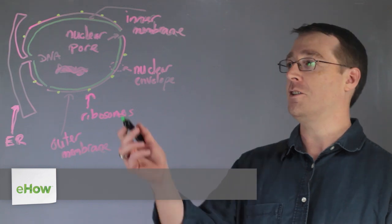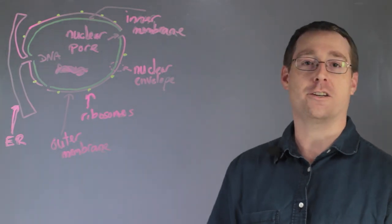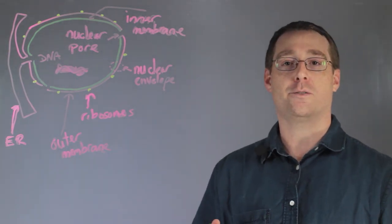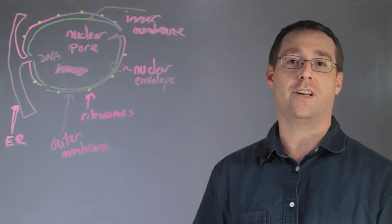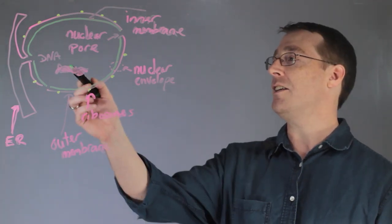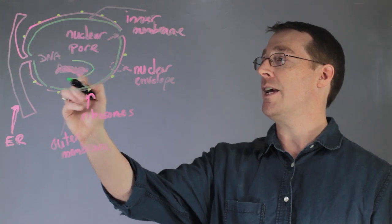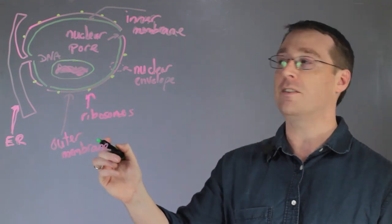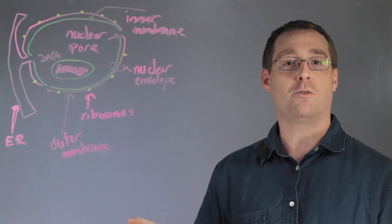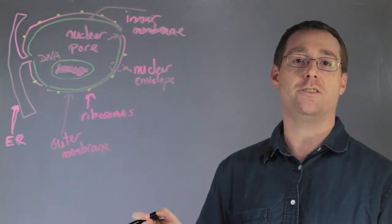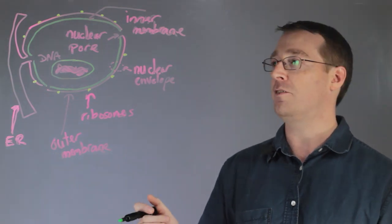Now the nucleus, shown here in this cross-sectional representation, is a small compartmentalized section of the cell which mainly contains genomic DNA, shown here with these squiggly lines, that is wrapped around histones and packaged into chromosomes, highly compacted and folded.